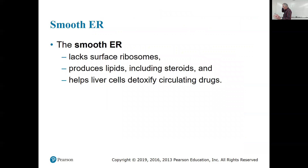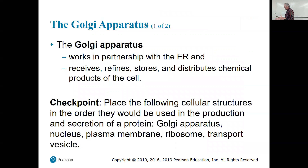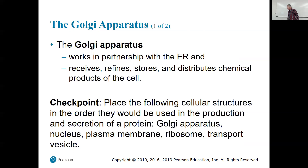The smooth ER produces lipids, including steroids, and helps liver cells detoxify drugs. The Golgi apparatus receives, refines, stores, and distributes chemical products to the cell — usually a protein that has to be modified in order to be completely functional.